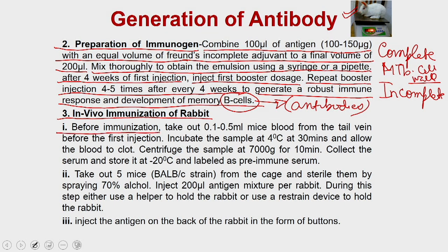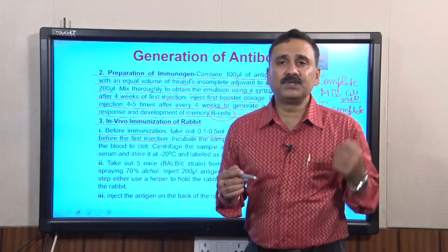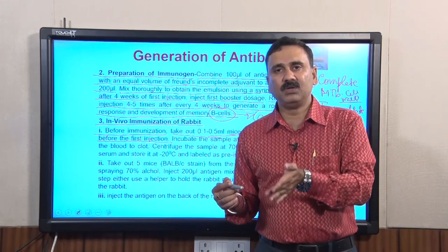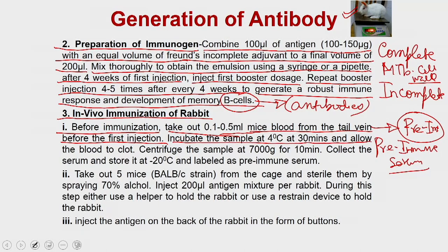Before you start immunization, take out at least 1–5 ml of blood from the tail vein before the first injection. This is required so that you know the amount of antibodies present in the animal before immunization — this is called pre-immune serum. Before you start with the immunization you should keep the pre-immune serum, which will be used as a comparison to see whether antibodies are being produced. Incubate the sample at 4°C, allow the clot to form, then centrifuge and prepare the serum.